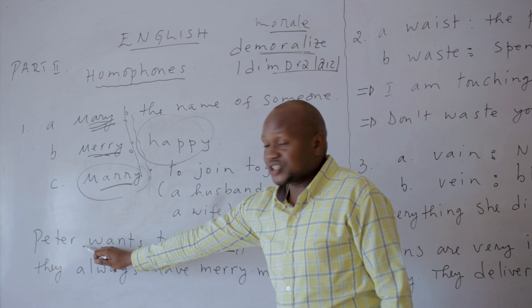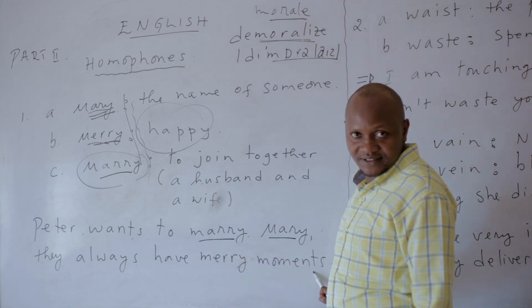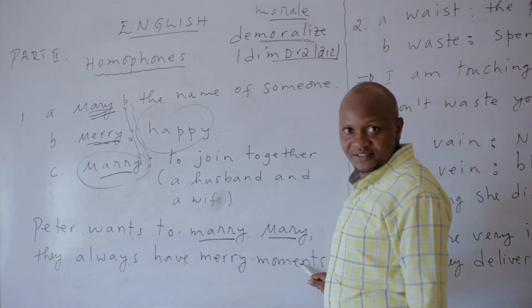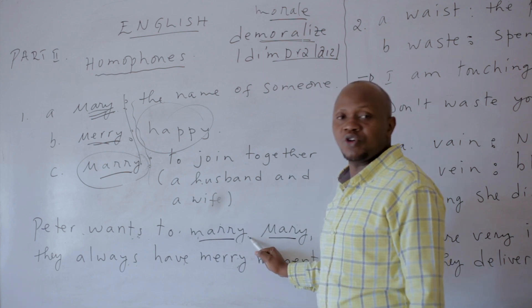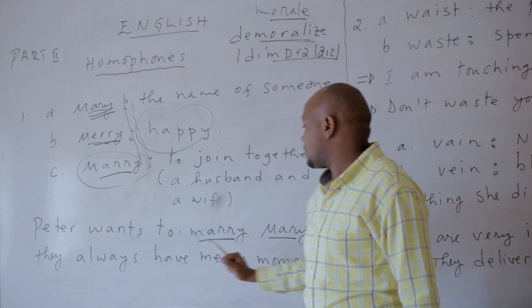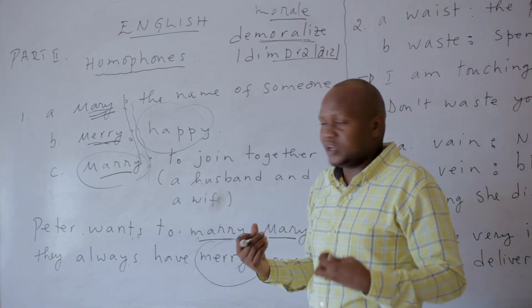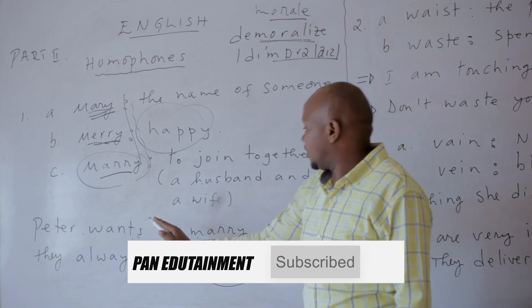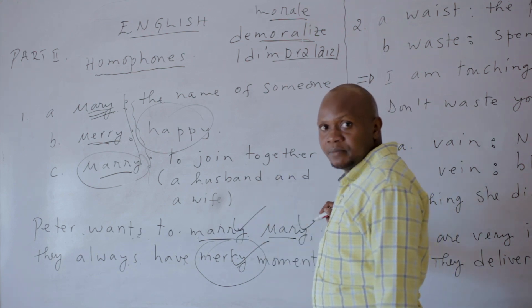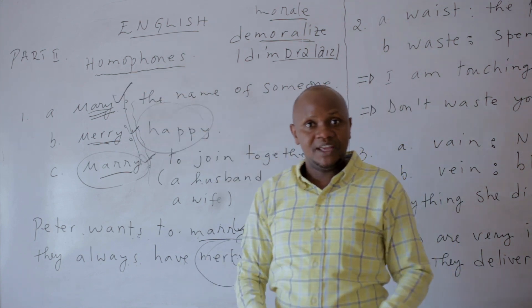For example: Peter wants to marry Mary. They always have merry moments. Peter wants to marry Mary — they always have happy moments. So we have 'Merry' meaning happy, 'Marry' meaning joining together, and 'Mary' as the female name. You should know this: Mary, Merry, Marry — and you know their meanings.